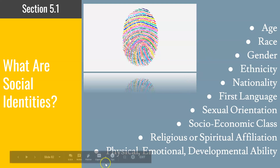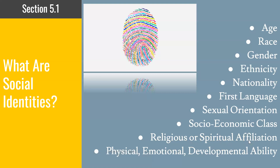The category of physical, emotional, and developmental ability sometimes raises questions. Physical ability may refer to being deaf or hard of hearing, or maybe having a walking disability. Emotional ability refers to any sort of conditions such as depression or anxiety. Developmental ability may refer to a learning disability such as ADHD. It's important to think about how we are all shaped by these social identity categories.